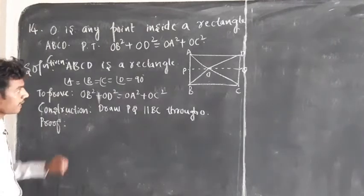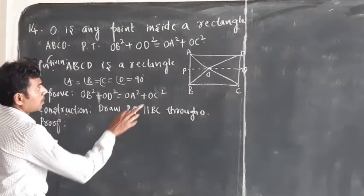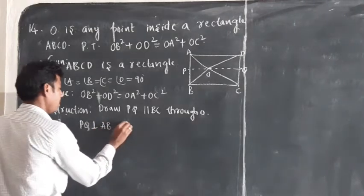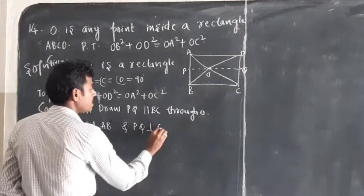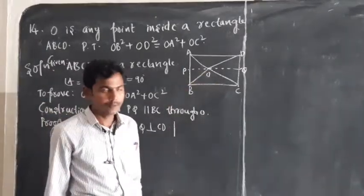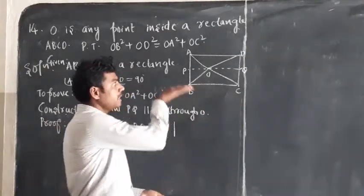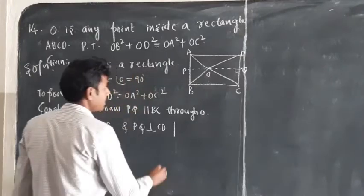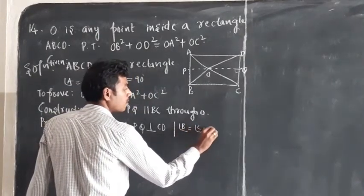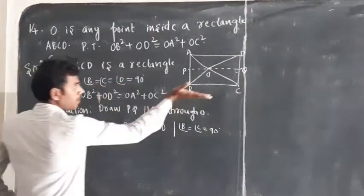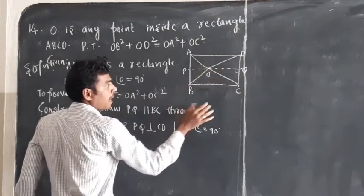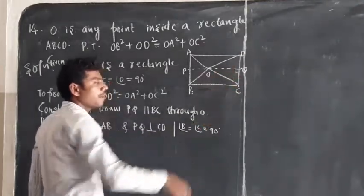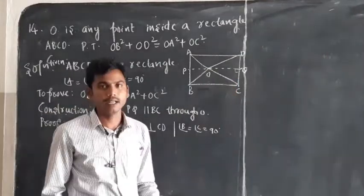Since PQ is parallel to BC and angle B and angle C are 90 degrees, PQ is perpendicular to AB and PQ is perpendicular to CD. Angles on the same side of a transversal sum to 180 degrees, so 90 plus 90 equals 180, confirming perpendicularity.